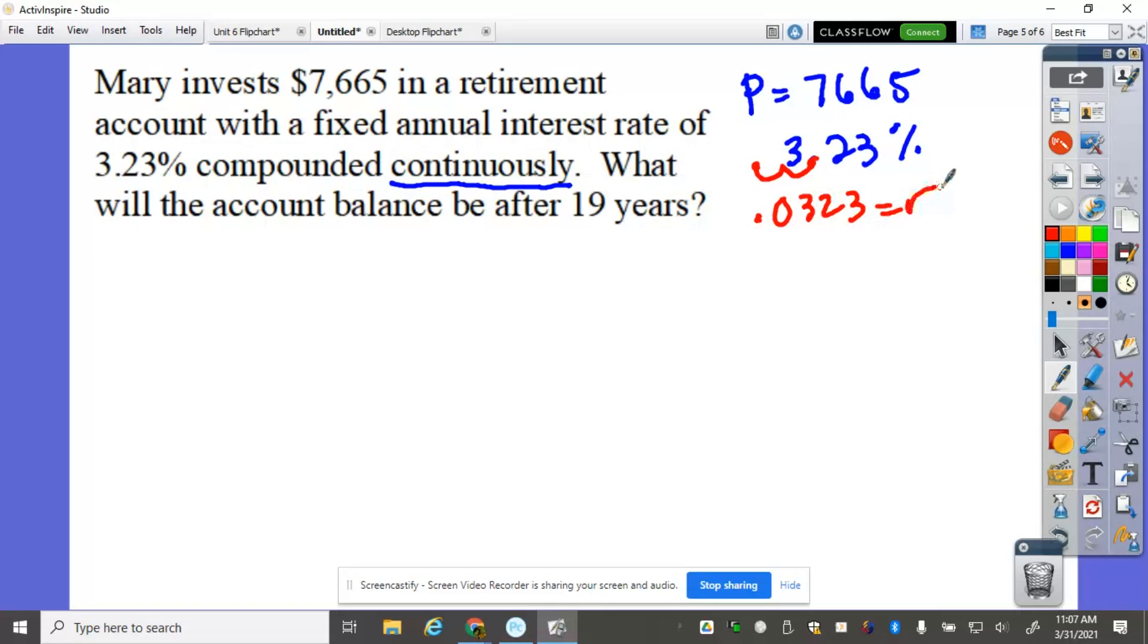That's your R, compounded continuously, so you know you're going to use the APERT, and the T here is 19 years, and those are the things that we know.